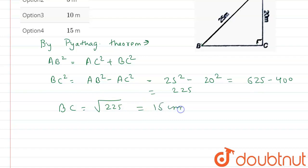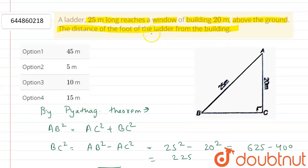So BC equals the distance between the foot and the building. The distance of the foot of the ladder from the building is 15 meters.